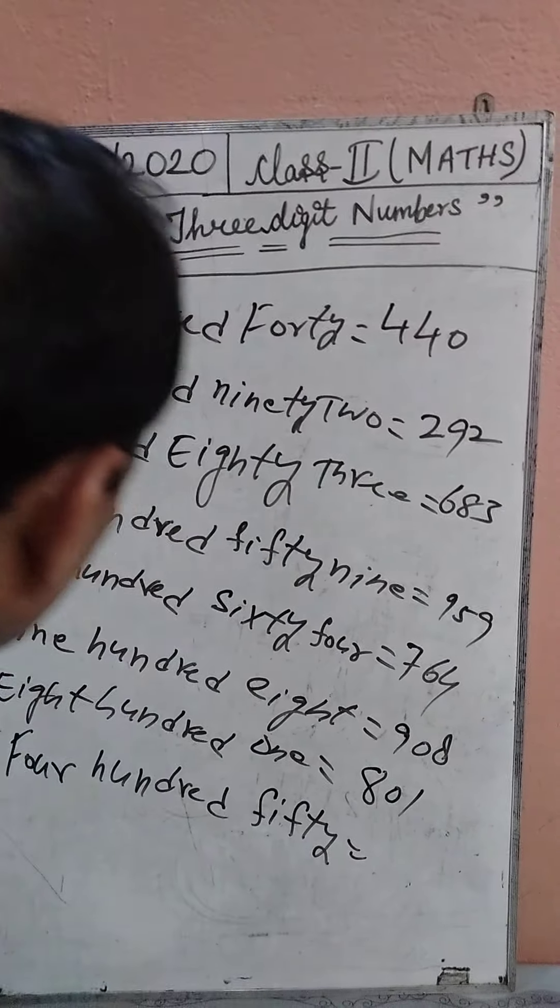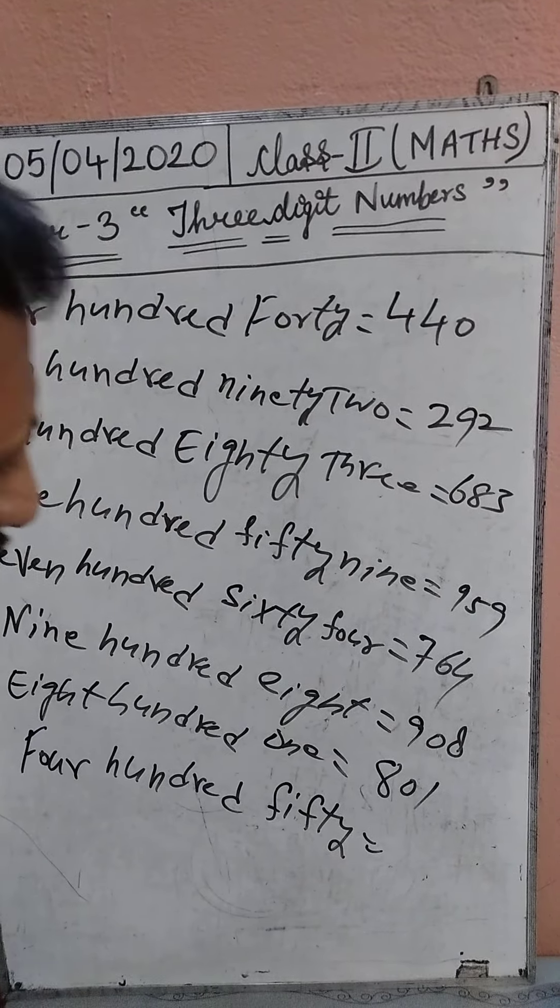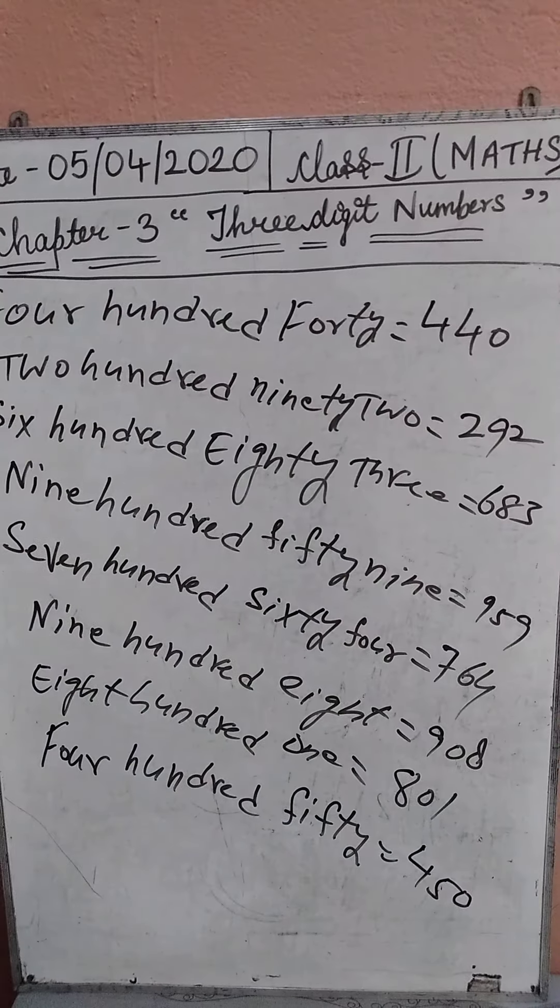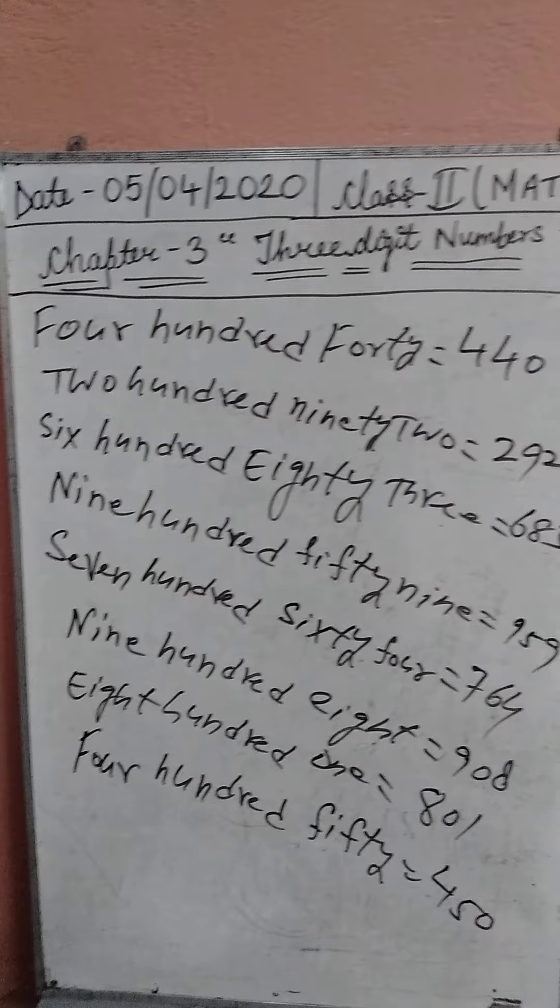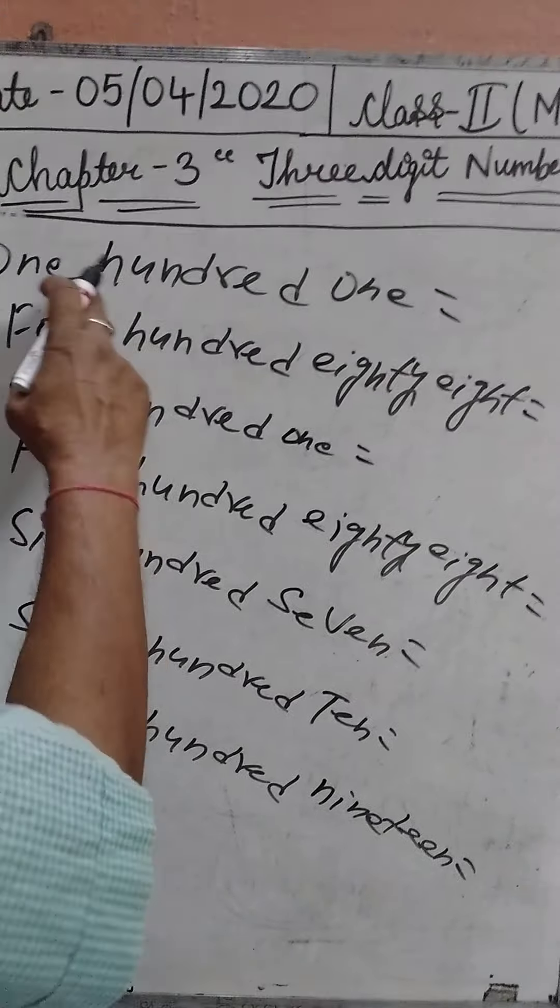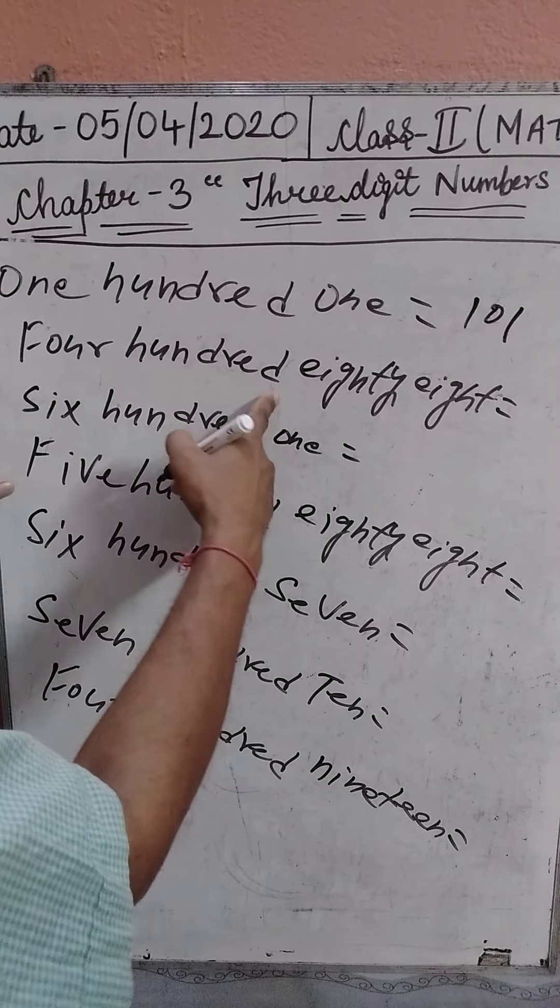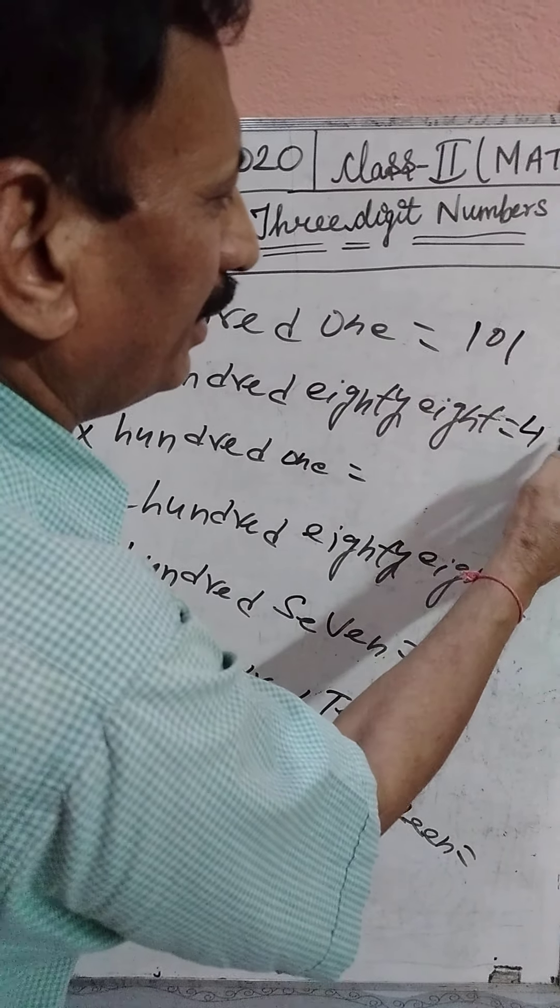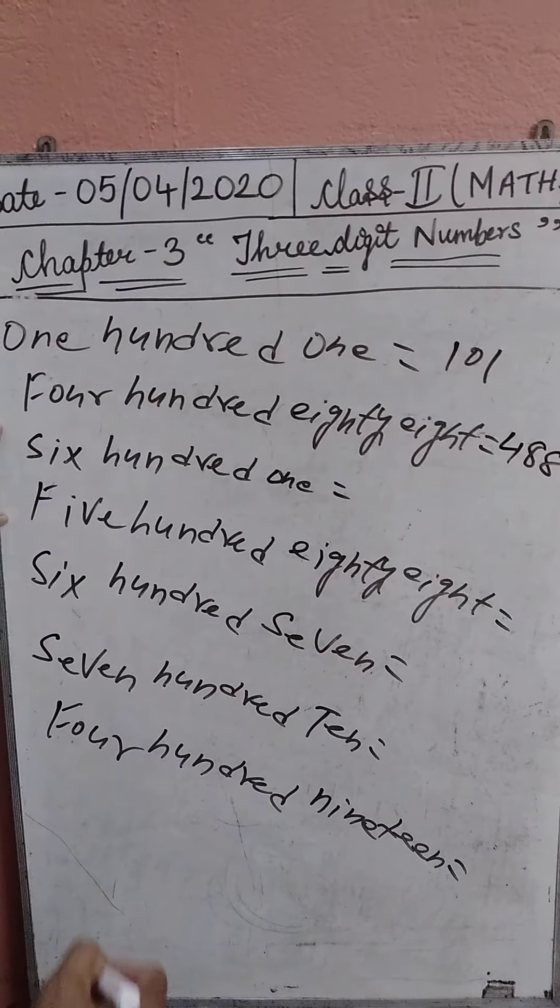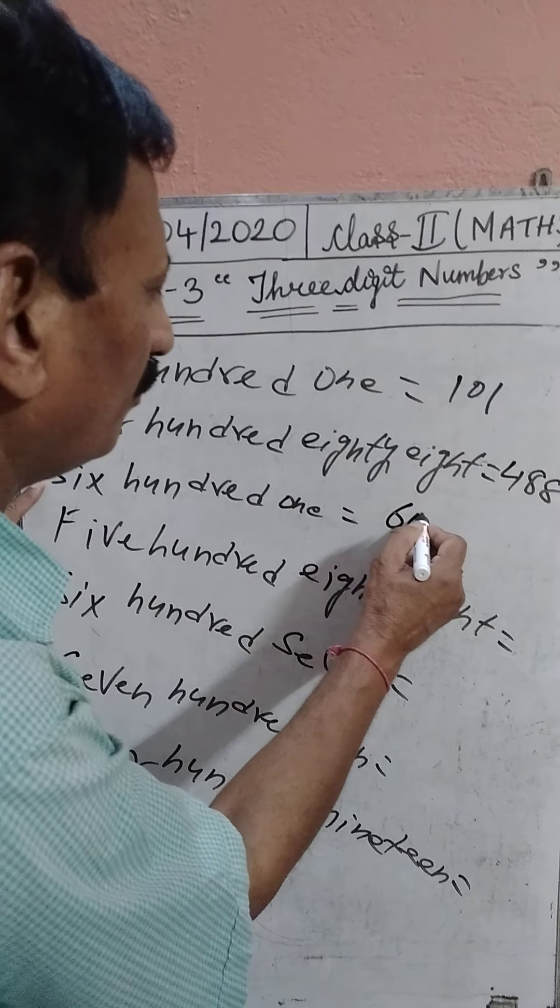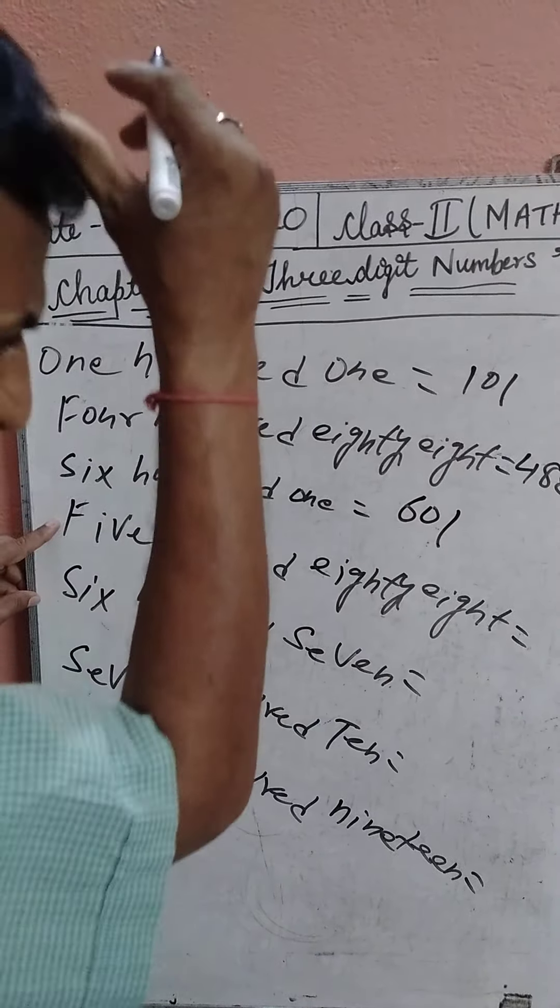Next, 450. Children, 101. 488. Next, 601. 588.